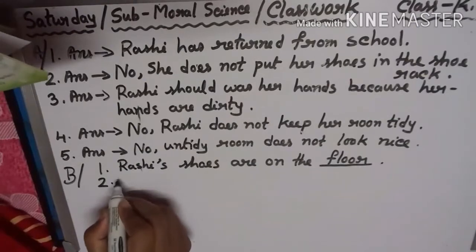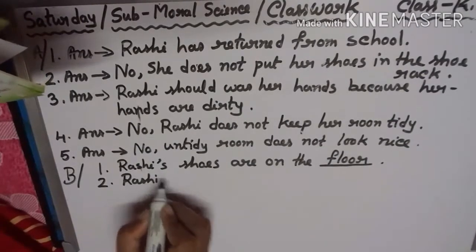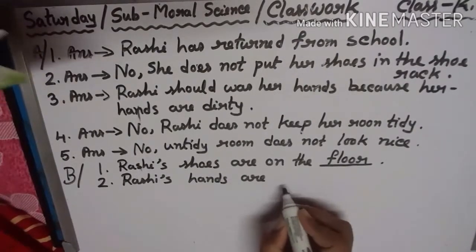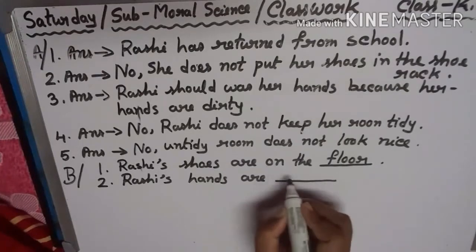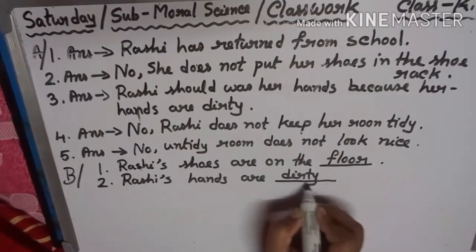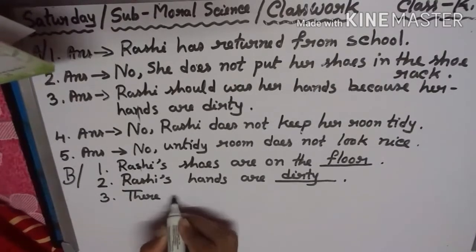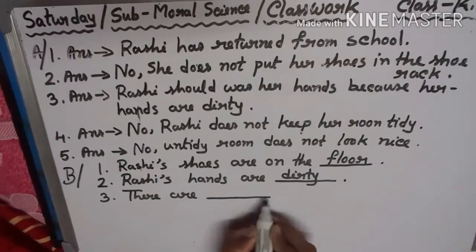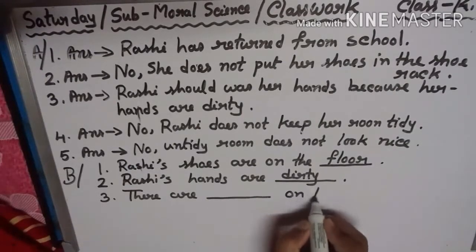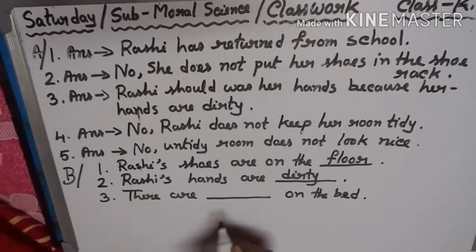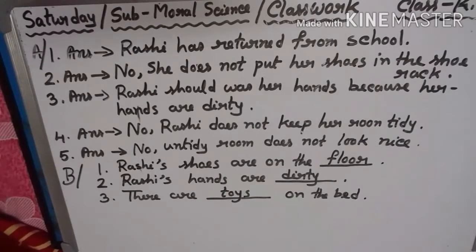Number 2: Rasi's hands are — dirty. Yes. Number 3: There are — on the bed. Toys on the bed. Yes, there are toys on the bed.